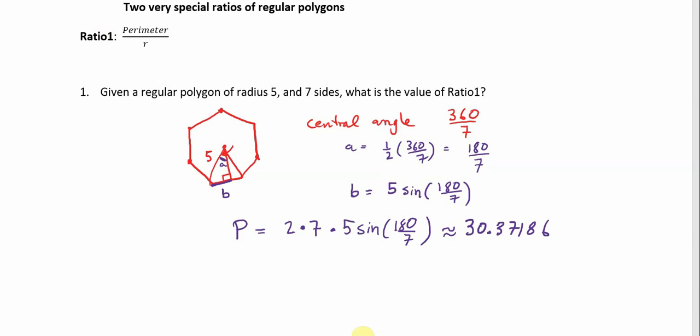And then, so that's the perimeter, and when I want to find the value of ratio 1, that's about 30.37186 divided by the radius which is 5. So that gets me a ratio here of approximately 6.074. So, as an example, this is what we've calculated for a septagon with a radius of 5. It has a perimeter of 30, and the ratio here, perimeter to radius, 6.074.